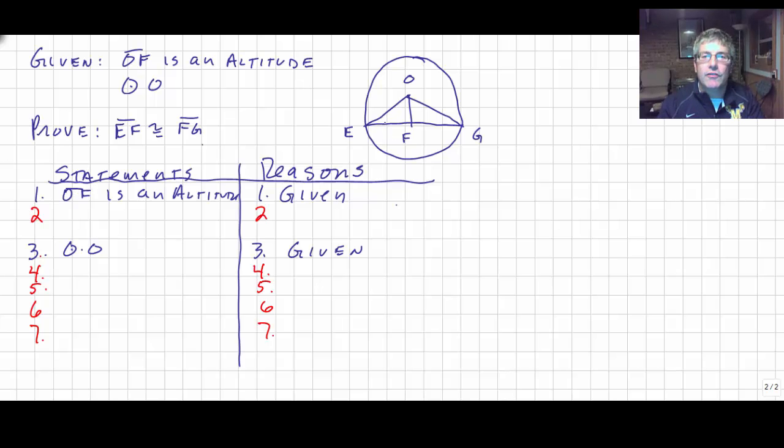We're given here in this circle that OF is an altitude. Well, hopefully we all know what altitudes do. Altitudes form right angles. So, we can say angle OFE and angle OFG are right angles. And our reason will be altitudes form right angles.